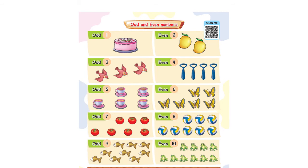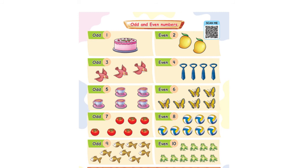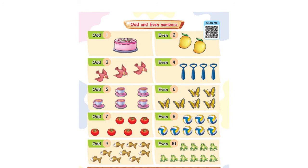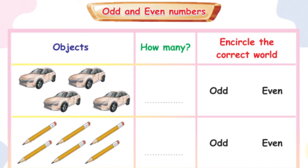Numbers 1, 3, 5, 7, and 9 are known as odd numbers because we cannot arrange these numbers in pairs. Numbers 2, 4, 6, 8, and 10 are called even numbers because we can arrange these numbers in pairs. Now we want you to look at page number 10 and try to count the objects and tell us how many objects there are, and encircle the correct word — whether this number of objects is odd or even.